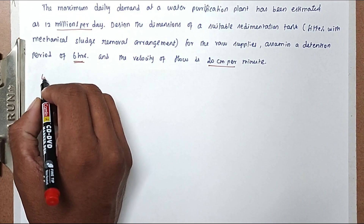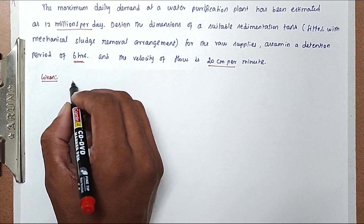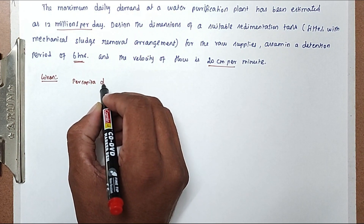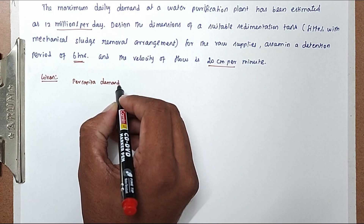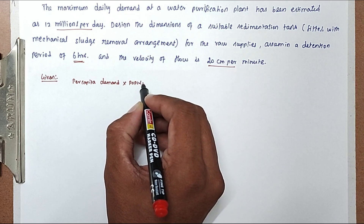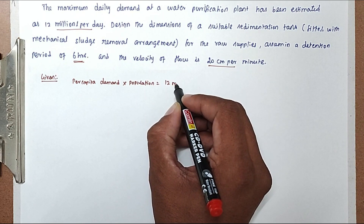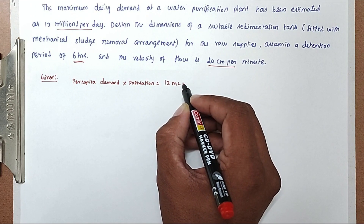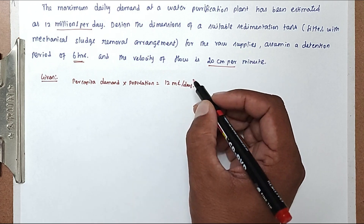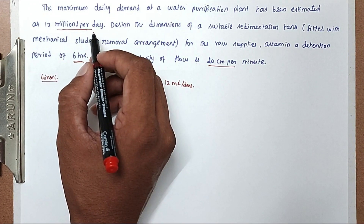So the given value is: per capita demand into population equals 12 million liters per day. So the daily sewage is 12 million liters per day.